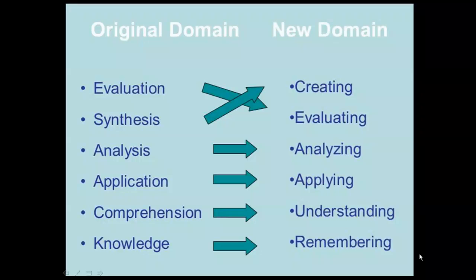This graphic shows the original and the revised version. There are basically three major differences: a change from nouns in the old version to verbs in the new version; the top two levels are essentially exchanged from the traditional to the new version; and the noun synthesis has been replaced with the verb creating. In 2007, Andrew Churches took the process of updating Bloom's work one step further when he introduced Bloom's digital taxonomy, marrying Bloom's cognitive levels to 21st century digital skills.